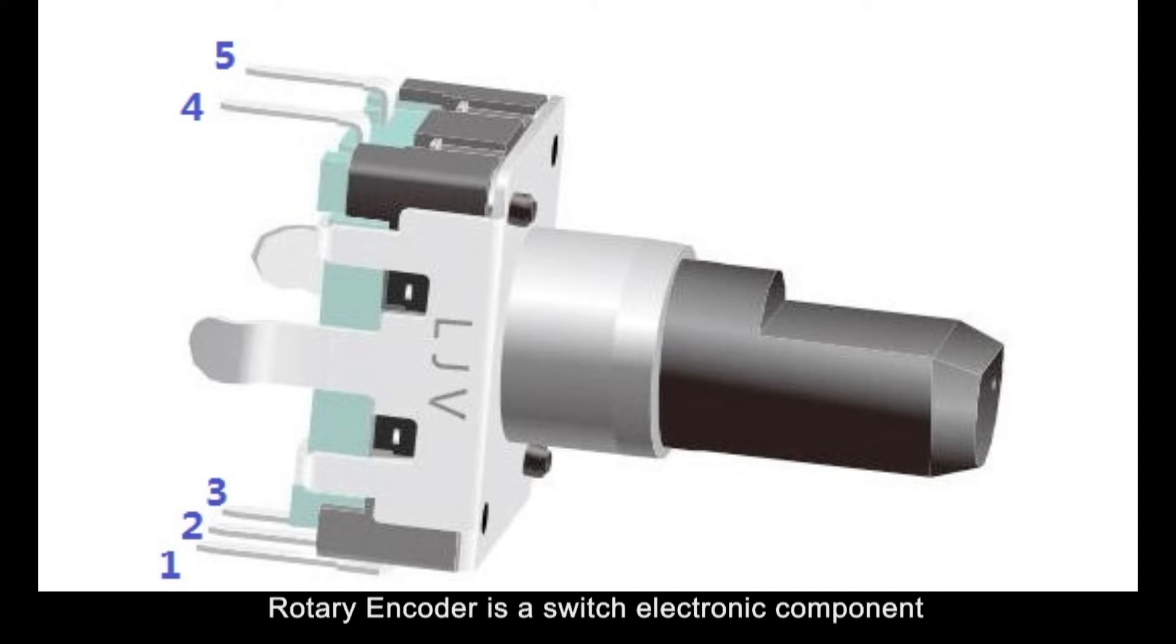Rotary encoder is a switch electronic component with a set of regular and strict timing sequence pulses. When using with IC, it can achieve increasement, decreasement, fidgeting and other operations.